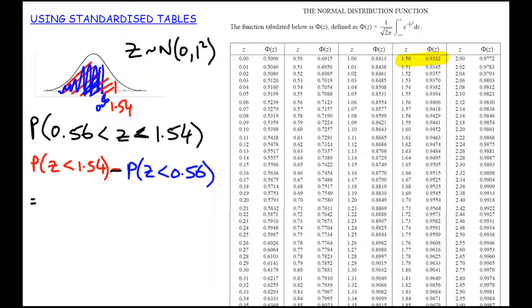And that should lead us to our answer. So less than 1.54, we'll find that in the tables. And from that, I'm going to subtract the probability that it's less than 0.56. And that leads us with our answer of 0.2259. So this area here, the area that I've shaded black, is going to be 0.2259.